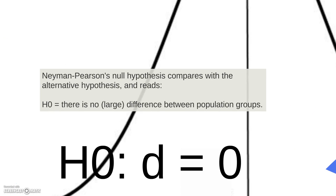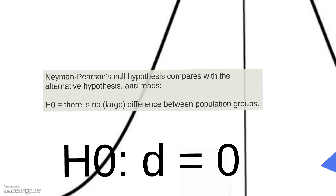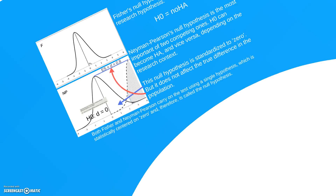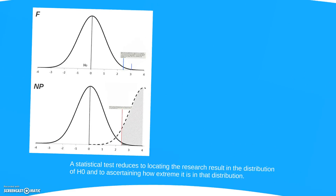When we look at the null hypothesis, it makes sense — you need to compare it against a certain hypothesis. So, the null hypothesis will be: there is no large difference between population groups, with this difference being standardized to zero using Cohen's d, for example.